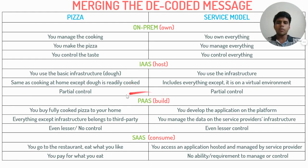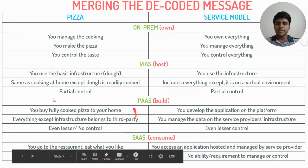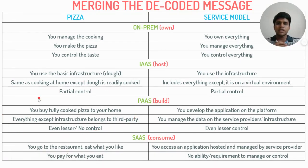With Platform as a Service, we build — we develop the application on the platform and data is managed on the platform. This gives an immense reduction in control but also a huge saving in cost. The corresponding pizza model is buying a fully cooked pizza delivered to your home — home delivery — where there is no control over the taste; you simply receive it and eat it.